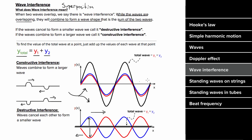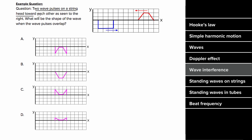What does an example problem involving wave interference look like? Two wave pulses on a string head toward each other. To find the total wave when they overlap, we add the values of each individual wave. Zero of the red wave plus negative two units of the blue wave equals negative two units total. Positive two units of the red plus negative two units of the blue equals zero. Again, positive two plus negative two equals zero. And zero of the red plus negative two of the blue equals negative two. So the total wave looks like the pyramid took a bite out of the rectangular blue wave.